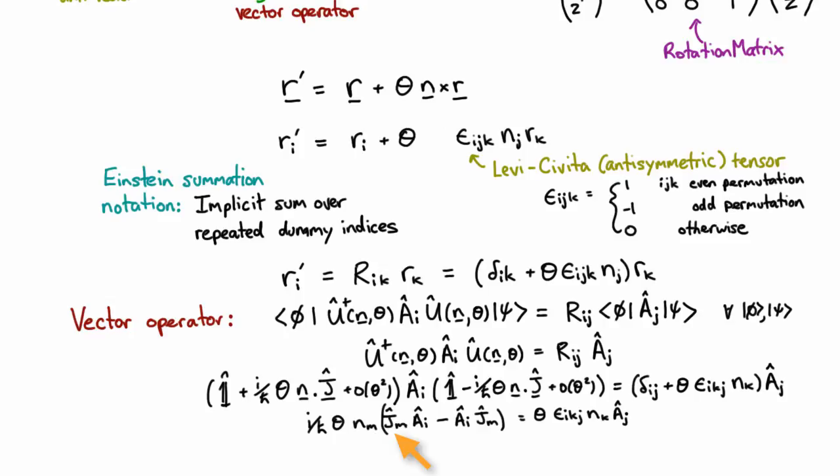I've expanded out the dot product into its components using the summation over M. I've deliberately used different dummy variables over here versus here so I don't get confused. This is clearly a function of i and this is clearly only a function of i. Now this is true for all choices of these unit vectors N, which means we can pick them to select out particular quantities, which means we can show that...